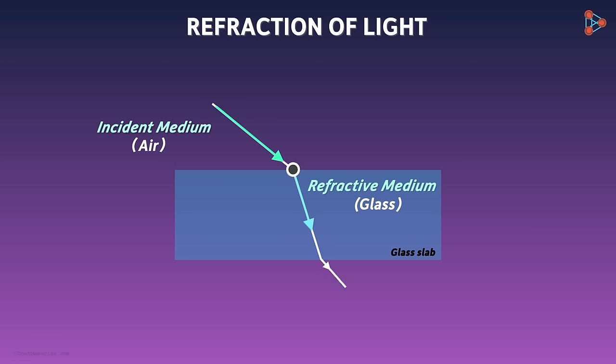Similarly here as well, the light is travelling from one medium to another medium. It's from glass to air. And here also it is incident at an angle. Since we know that air is a transparent medium, light bends at this boundary and travels through air. So light refracted at these two points.